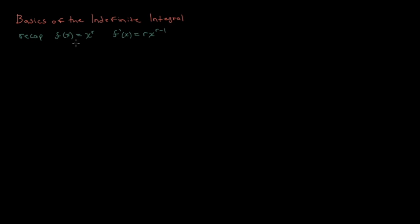If you look back at our old power rule, we know that if we're given a function x to the power of r, the derivative f prime at x is equal to r times x to the power of r minus 1. So we multiply the exponent by x and then reduce the exponent. For instance, if f at x is equal to x to the power of 3,